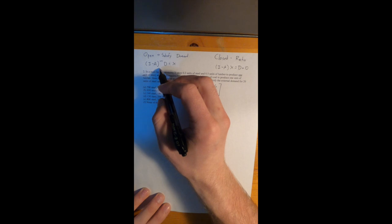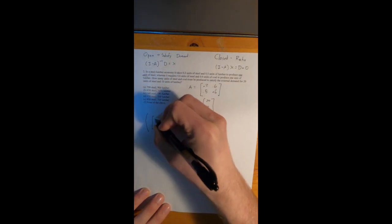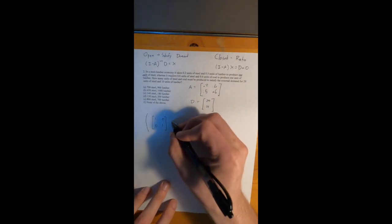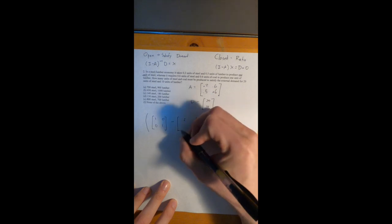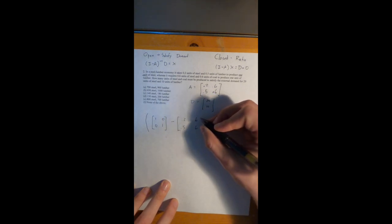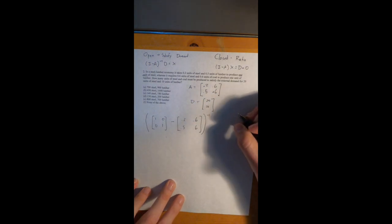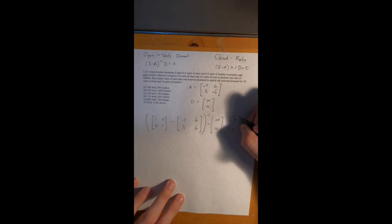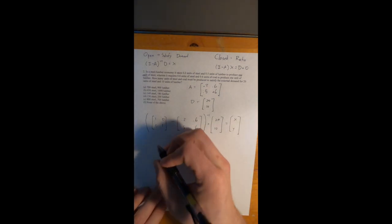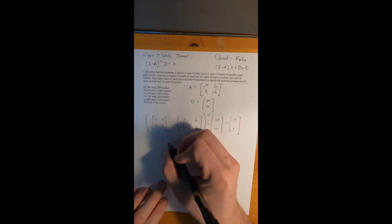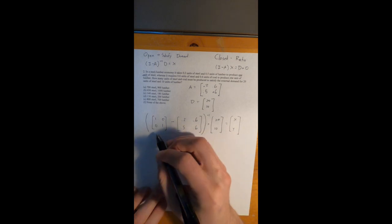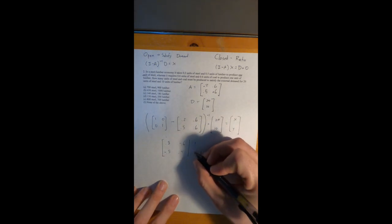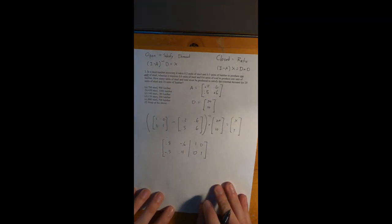We expand the equation. I is the identity matrix — make it the same size as A, so a 2×2. We compute I minus A: 1 − 0.2 = 0.8, 0 − 0.6 = −0.6, 0 − 0.5 = −0.5, 1 − 0.6 = 0.4. We need to find the inverse of that matrix, so we place it next to the identity matrix to set up the augmented system.